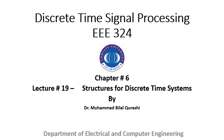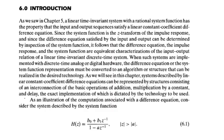I am Sigma Processing. Today we will start Chapter 6, Lecture 19: Structures for Discrete Time Systems. In today's lecture, we will talk about the implementation of discrete time structures. We will talk about the direct forms — Direct Form 1 and Direct Form 2. We will talk about the basic building blocks of structures and why we need these structures.